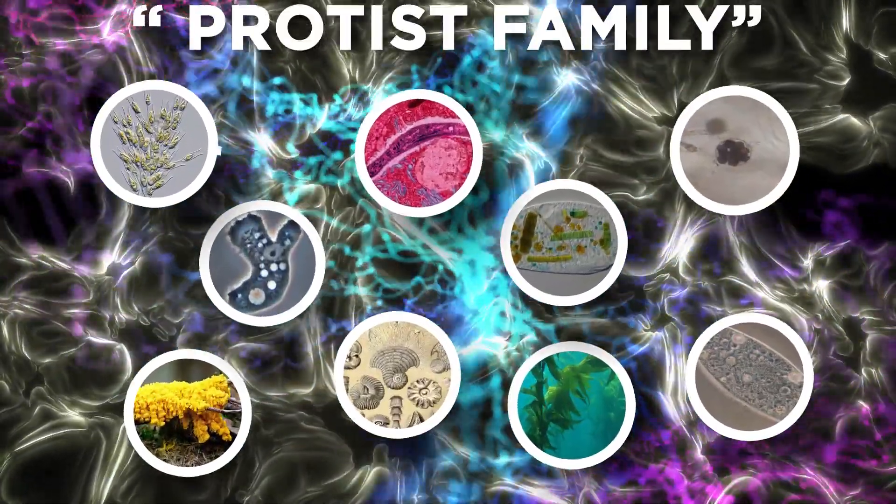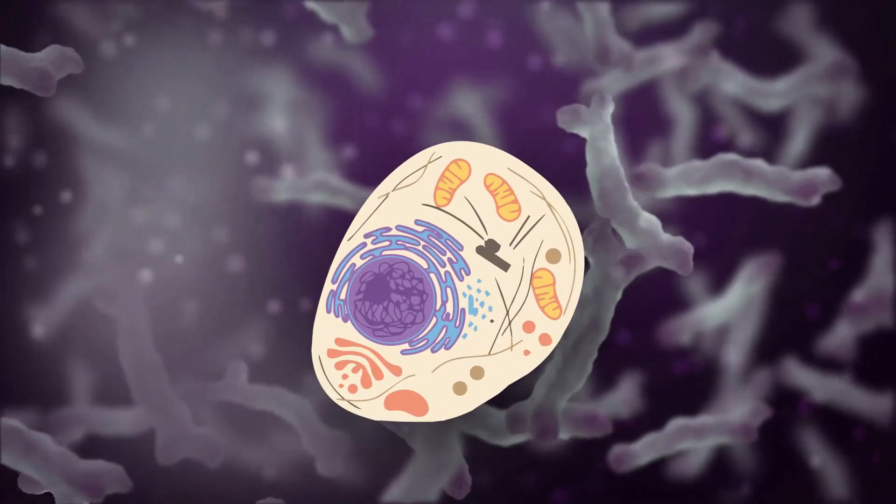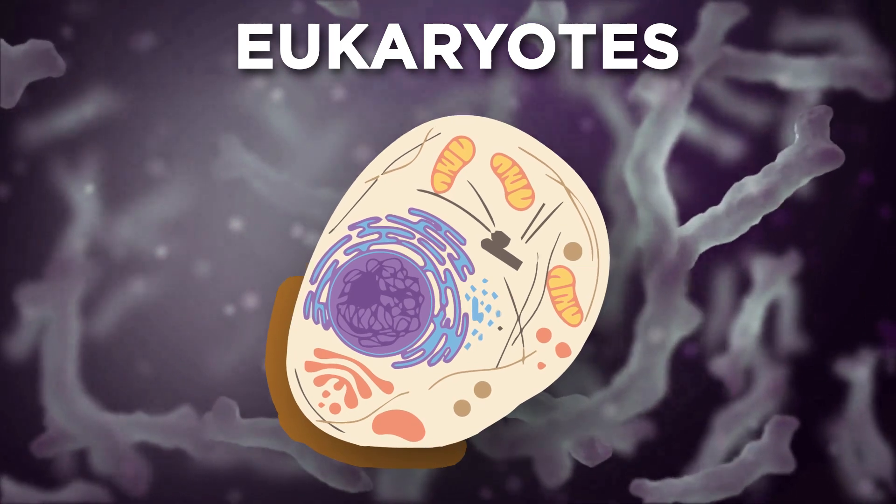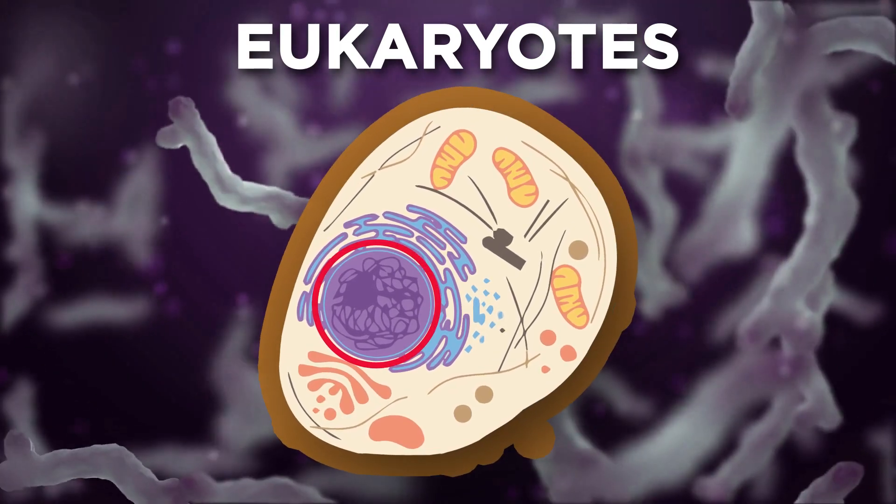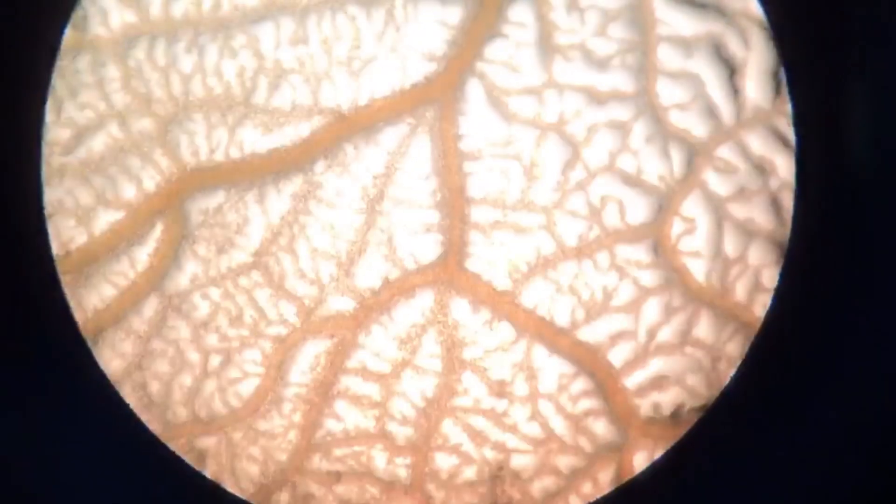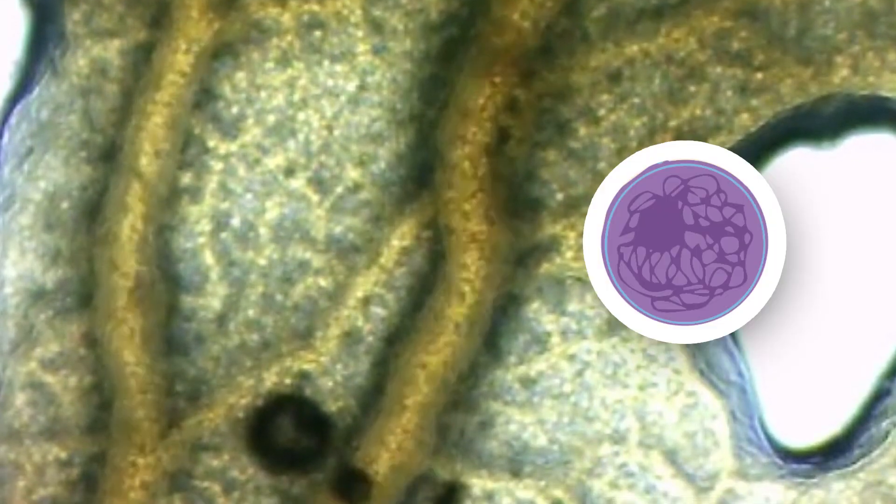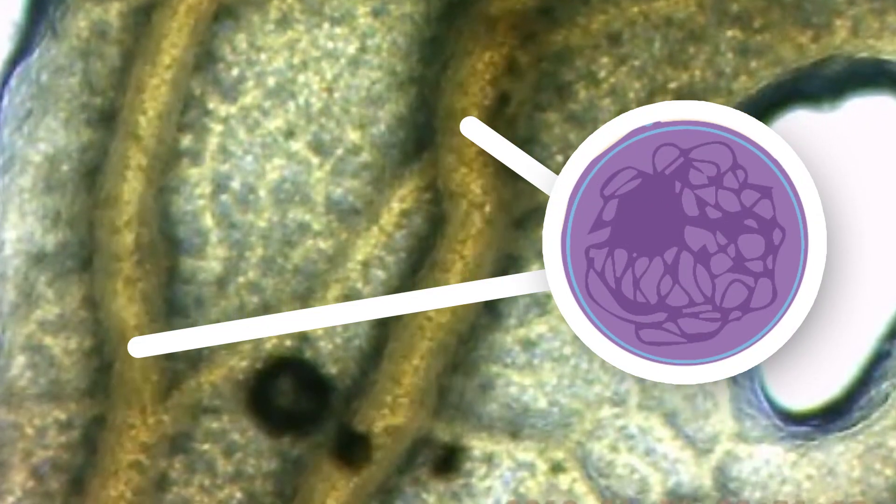Though not all slime molds are related to each other, they are often grouped together in the protist family. Slime molds are eukaryotes, organisms with a nucleus enclosed in a membrane. And what makes them so fascinating is that the expansive vein-like networks that often surround the goopy blobs are in fact mysteriously unified collections of millions of individual nuclei.